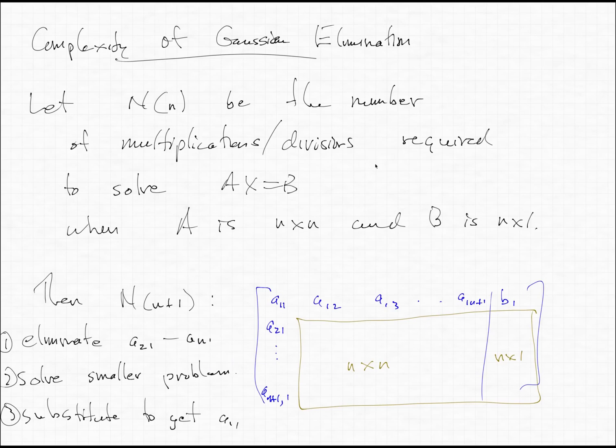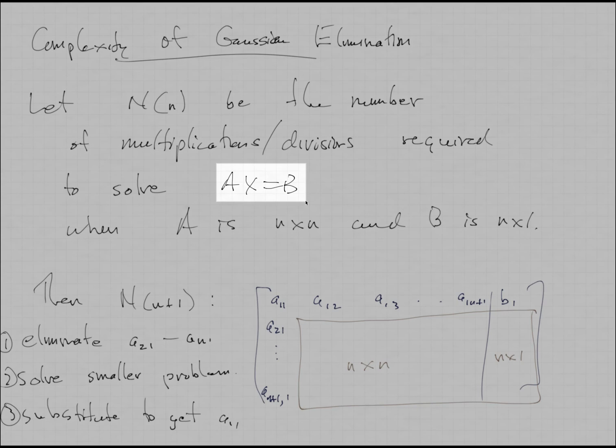Okay. Now, the main topic for today, and it's not a long one, I want to talk about the computational complexity of Gaussian elimination. So let's suppose that we're going to solve a system AX equals B, where A is an N by N matrix, and B is just an N by 1 matrix. Just assume that B is just a vector in this case. Then I'm going to let capital N of little n stand for the number of multiplications and divisions that are required in order to do the calculation to solve for X.